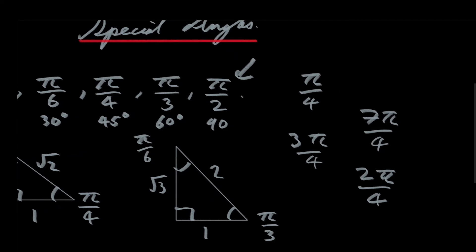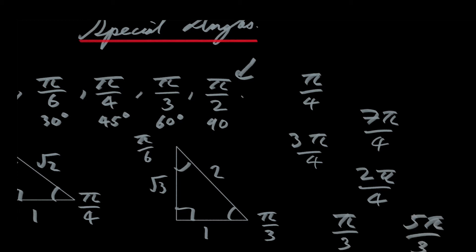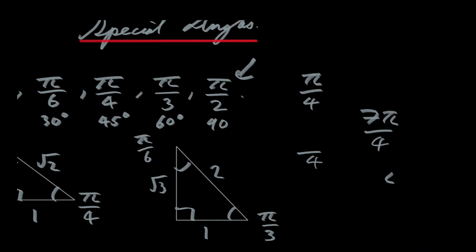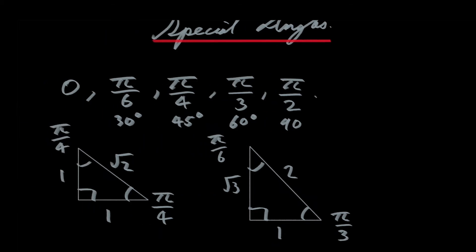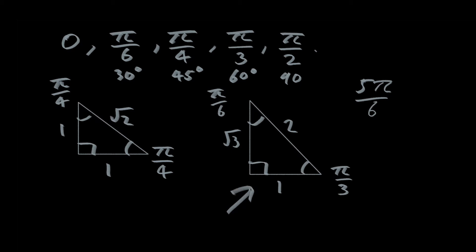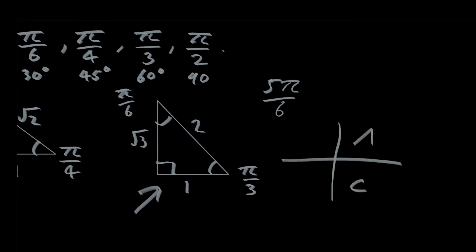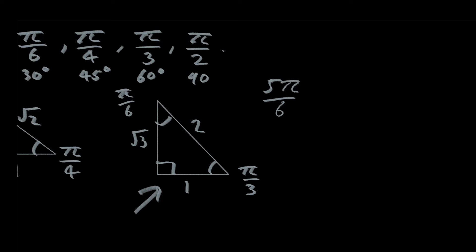If you can calculate the sine and cosine of pi over three, you can also calculate the sine and cosine of five pi over three. For the multiples of the special angles other than multiplying by one, I'll save that for another video so this one isn't too long. Basically, you just need one of the special triangles and then a CAST diagram to find out whether your answer is positive or negative.